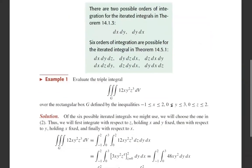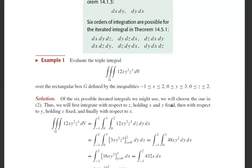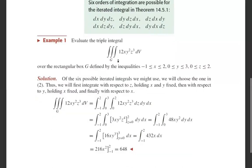Now the first problem: evaluate the triple integral over g of 12xy²z³ dV over the rectangular box g defined by the inequalities: x is between −1 and 2, y is between 0 and 3, z is between 0 and 2.